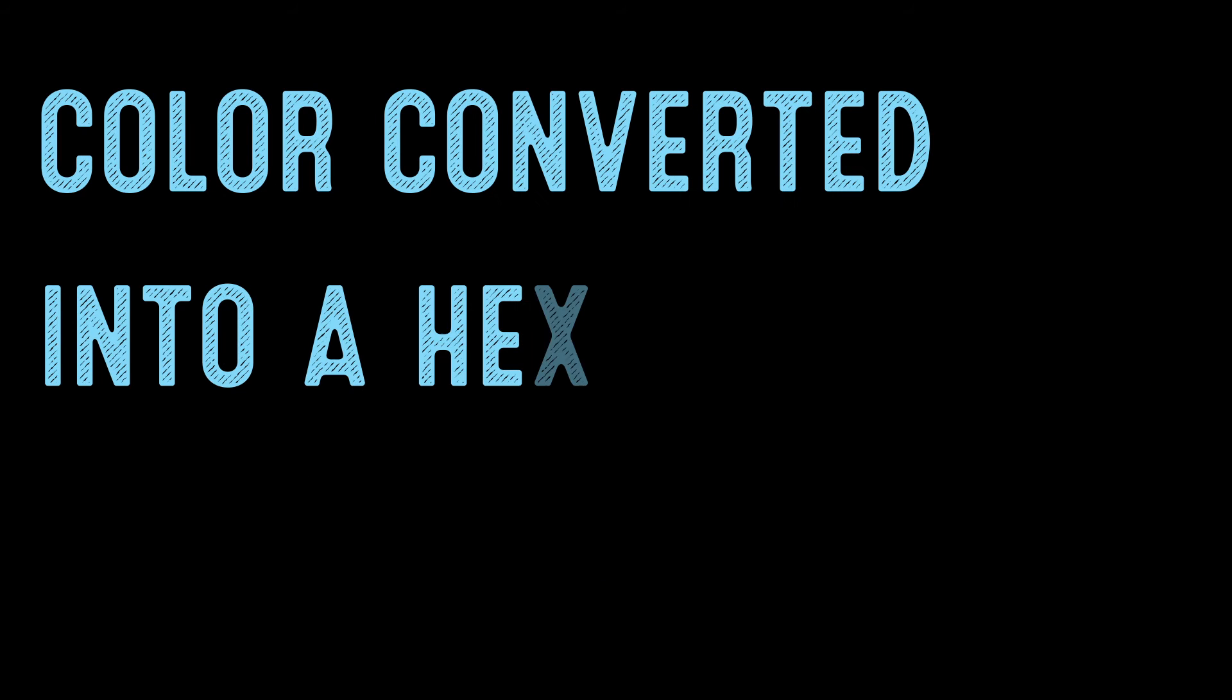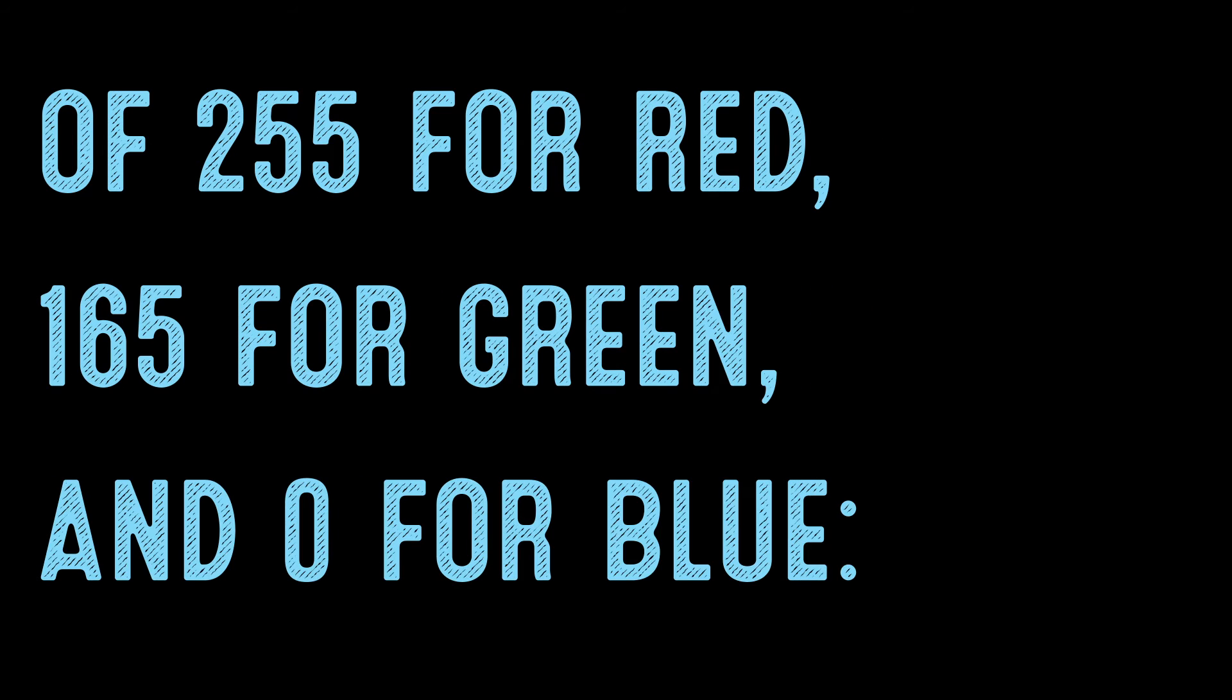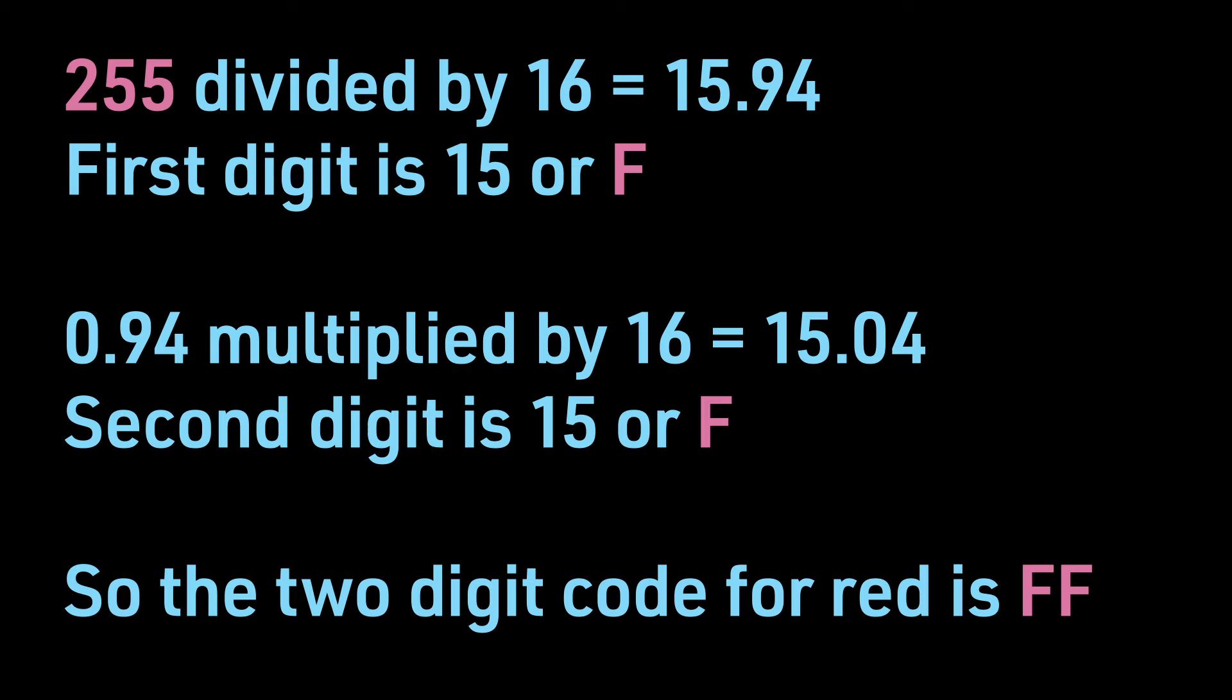So how is the RGB color converted into a hex color? If we take the color orange as an example, which has an RGB value of 255 for red, 165 for green, and 0 for blue, we would first take 255 divided by 16 to get 15.94. This would mean the first digit is 15 or the letter F. So for the red, we would get a combination of the digits FF.